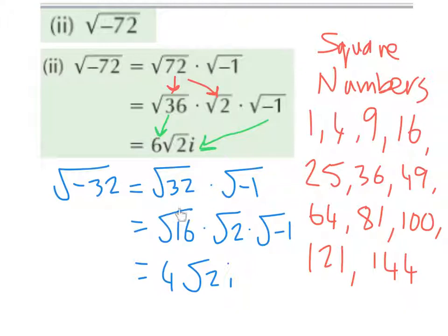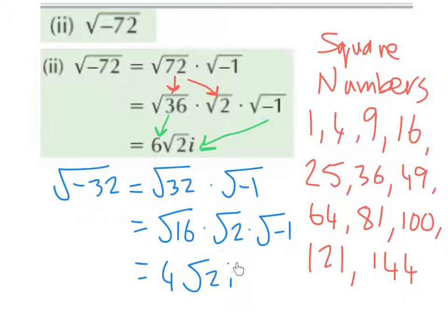The square root of 16 is 4, the square root of 2 just stays as root 2, and the square root of minus 1 is i. So the square root of minus 32 is 4 root 2i.